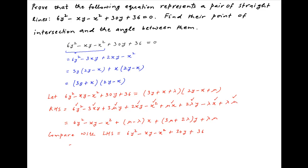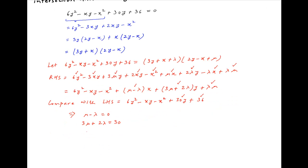Equating the coefficients of like terms, we get: the coefficient of x gives μ - λ = 0; the coefficient of y gives 3μ + 2λ = 30; and the constant term gives λμ = 36.